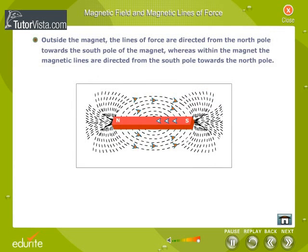Outside the magnet, the lines of force are directed from the north pole towards the south pole of the magnet. Whereas, within the magnet, the magnetic lines are directed from the south pole towards the north pole.